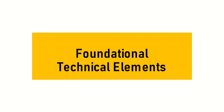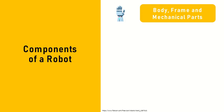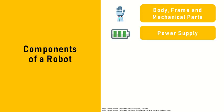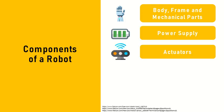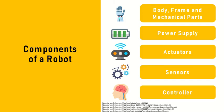Let us now go through the foundational technical elements that underpin advanced robotics. So how exactly do robots work? Robots can be said to be structured and work in a way similar to humans. They consist of five main components that perform different functions: a body frame and mechanical parts, a power supply, actuators, sensors, and a controller.